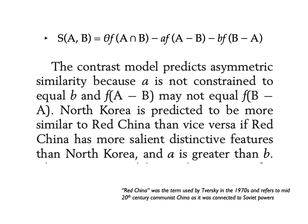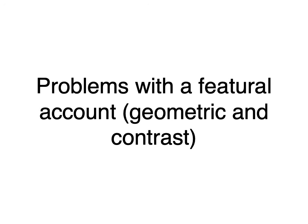The contrast model, like the geometric model, is a feature-based model, and there are some problems with feature-based models. Both have difficulty accounting for how we perceive features — they assume we know and perceive these features. There are two main issues. First, feature selection is flexible and context-specific; when you pay attention to a feature depends on how you're asked. A study from Doug Medin's work on flexible similarity illustrates this point clearly.